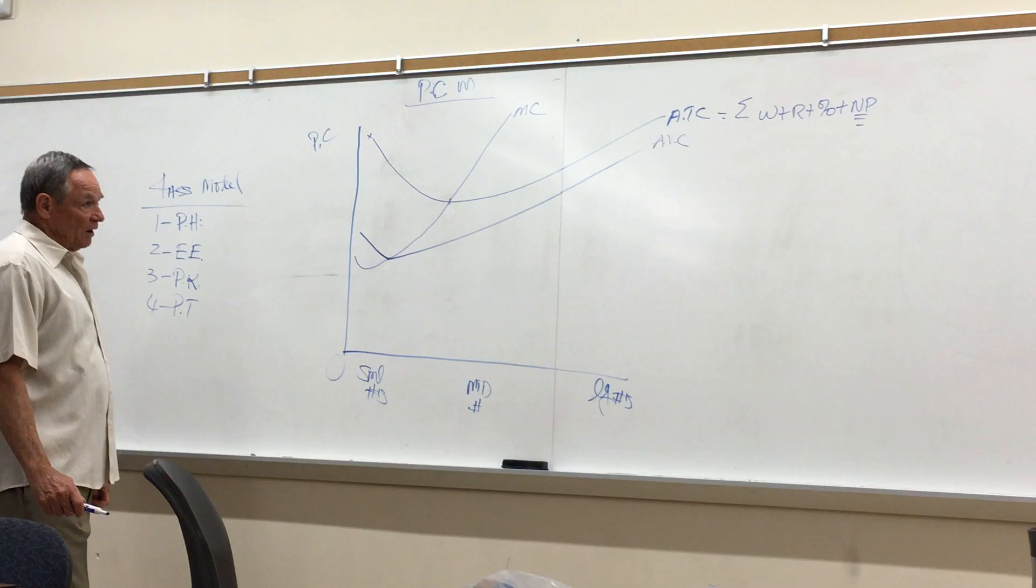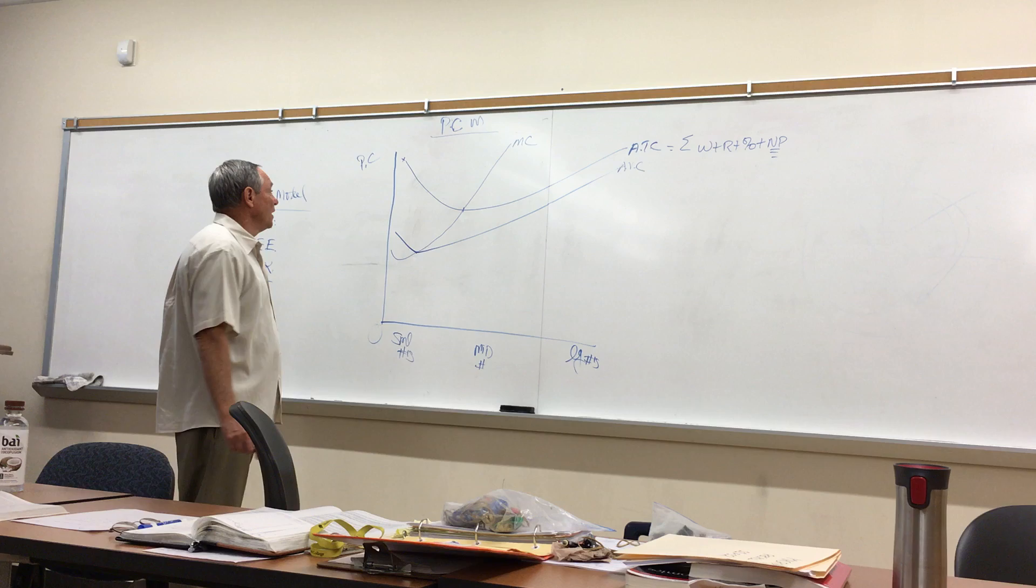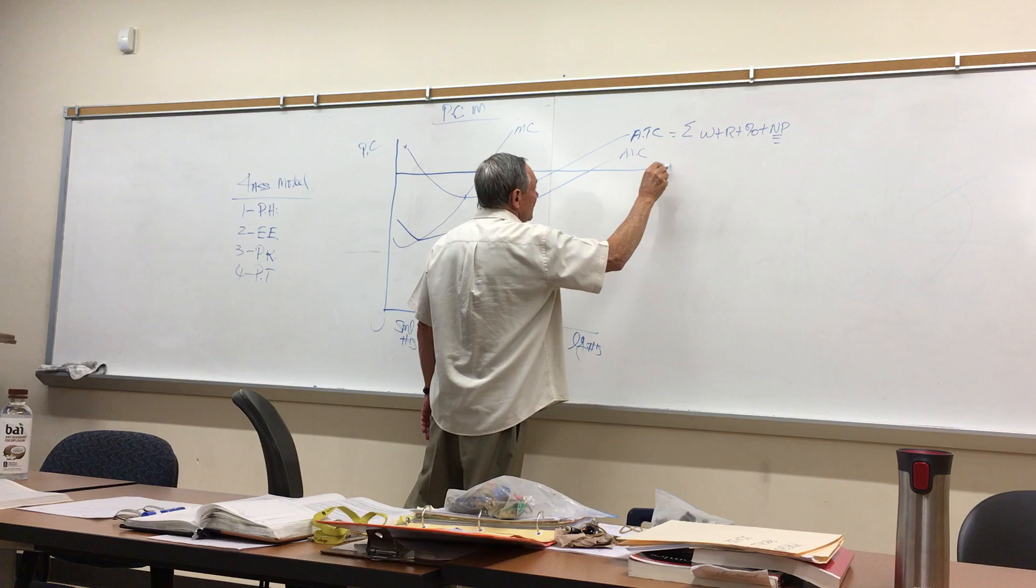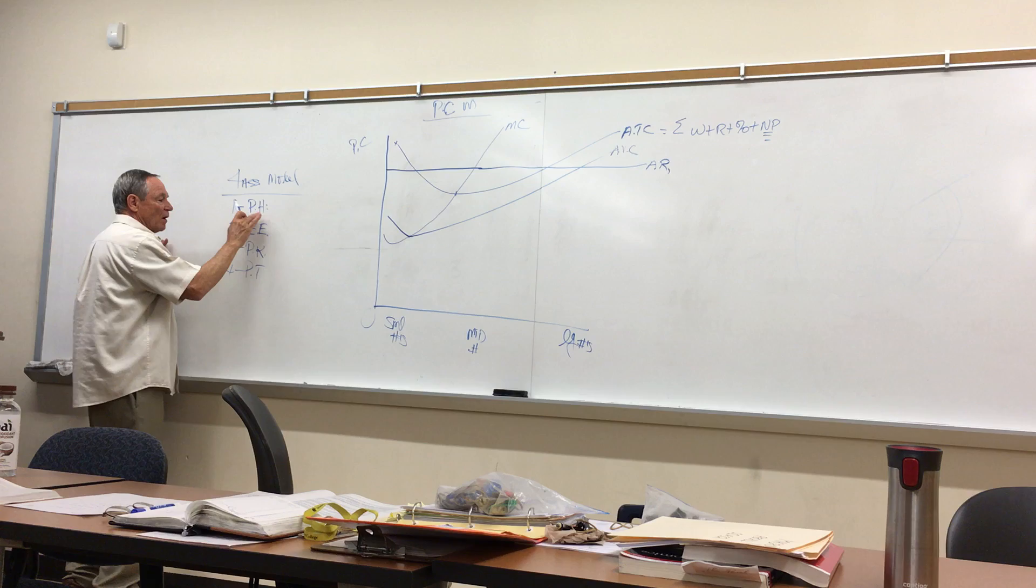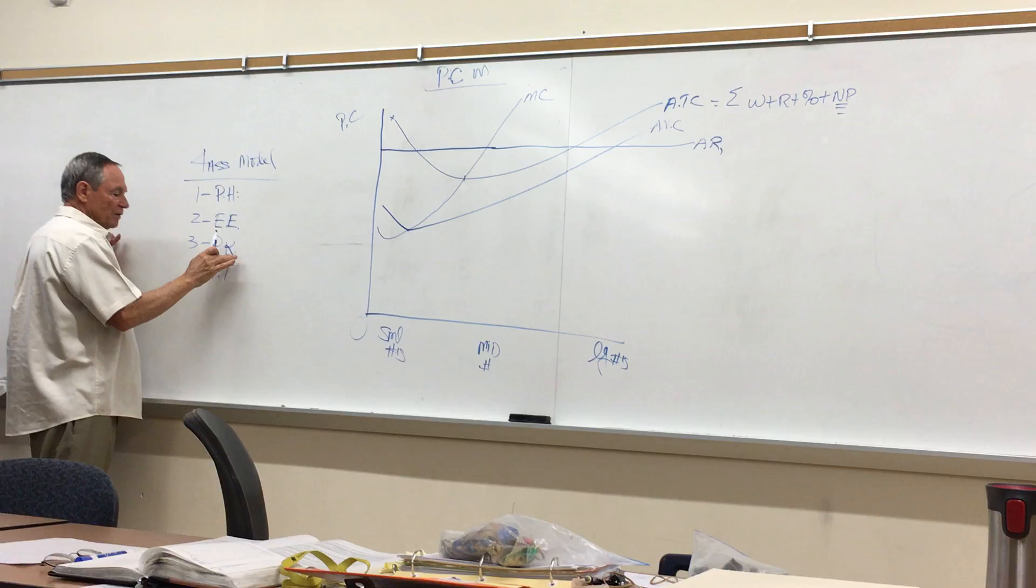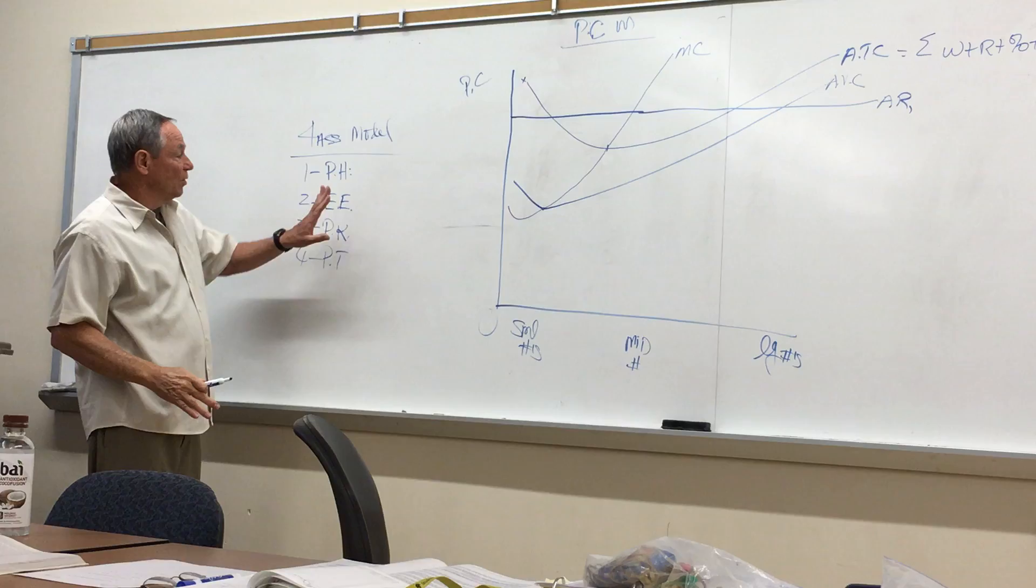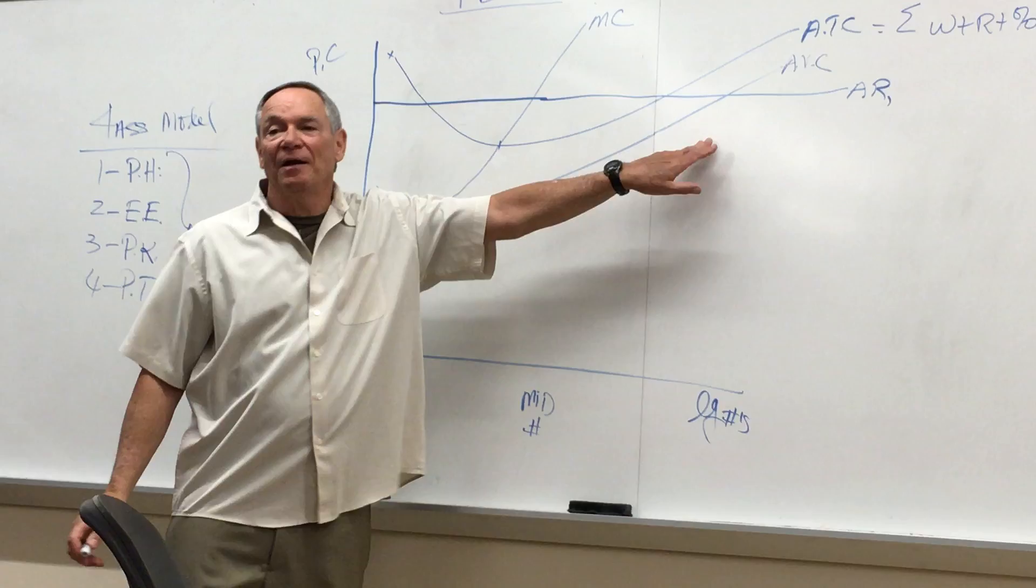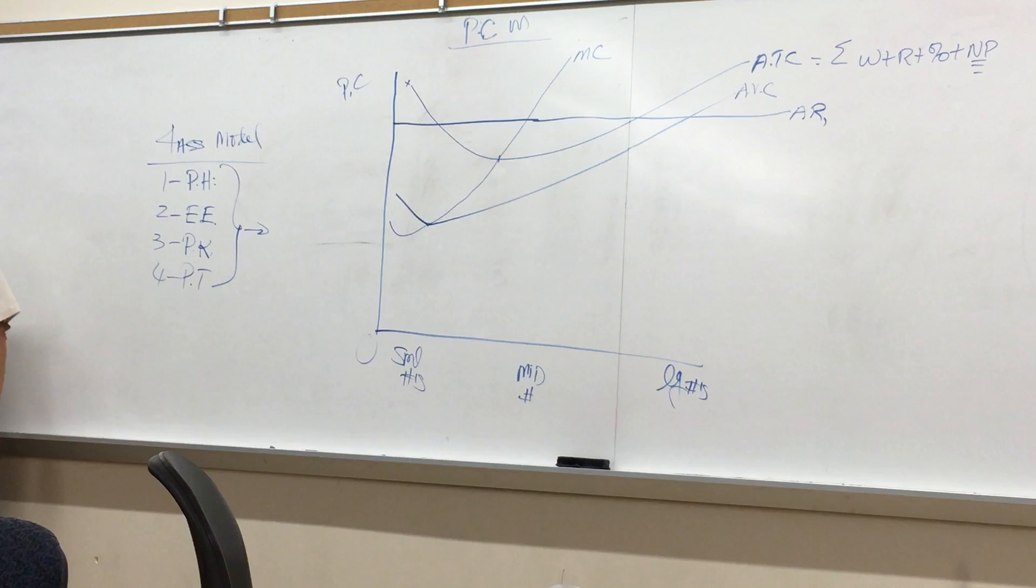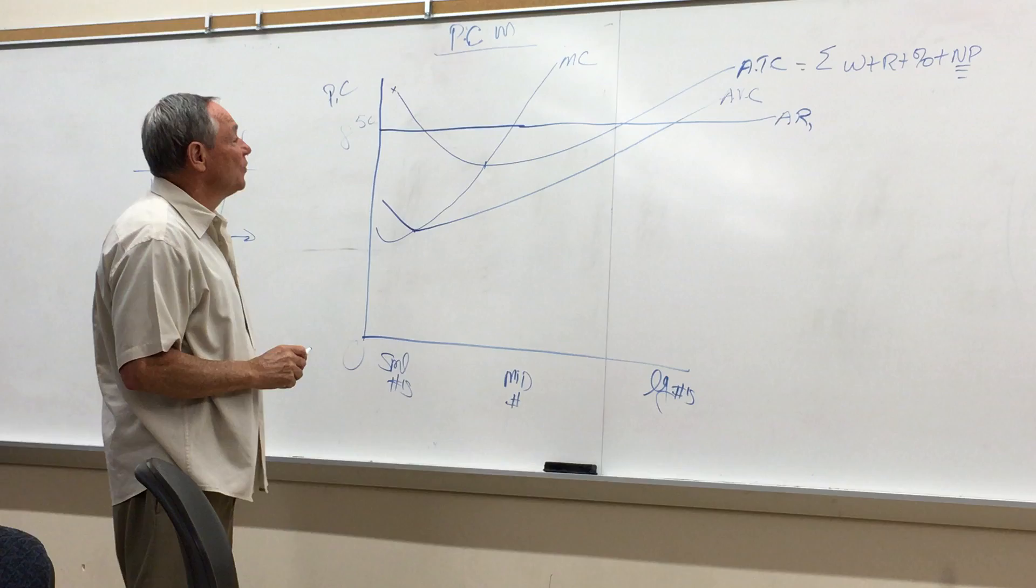A firm does not operate on cost alone. It needs to operate in regards to revenues. So let's draw a revenue curve here, average revenue, and we'll make it horizontal. The reason we make it horizontal, which we call average revenue one, is because of these four assumptions: product homogeneity, the assumption of exit and entry, perfect knowledge, and price takers. I don't care what order you put this in, but armed with this logic, this logic creates this graph here.